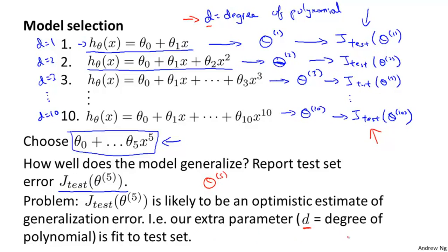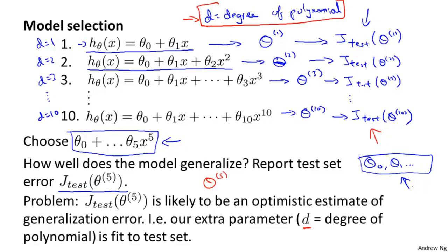To reiterate: on the previous slide we saw that fitting parameters to some training set means the performance on that training set is not predictive of generalization to new examples. Similarly, in the procedure just described, we fit parameter D to the test set. By having fit the parameters to the test set, the performance of the hypothesis on the test set may not be a fair estimate of how well the hypothesis will do on examples we haven't seen before.